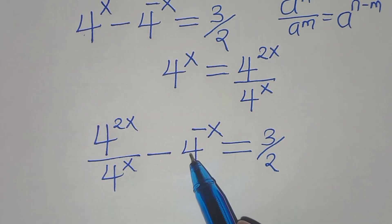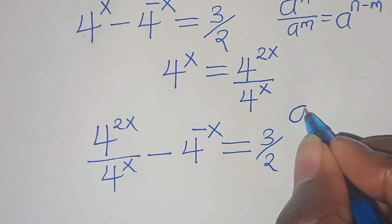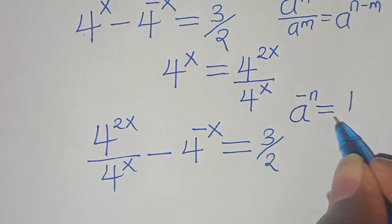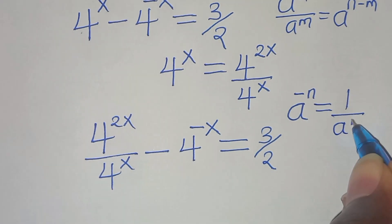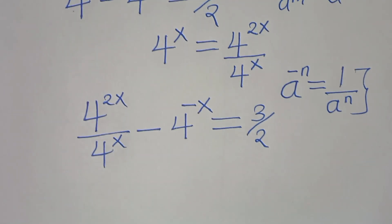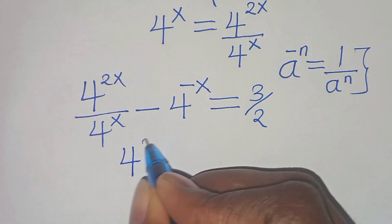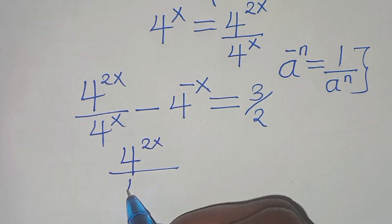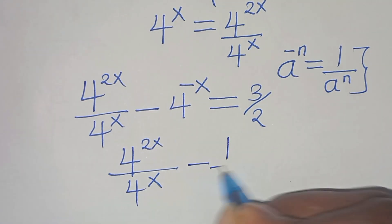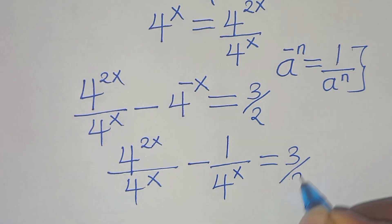The next step: 4 to the power of minus x is in the form a to the power of minus n, which we can express as 1 over a to the power of n. Applying this property, we have 4 to the power of 2x divided by 4 to the power of x, minus 1 over 4 to the power of x, and this equals 3 over 2.